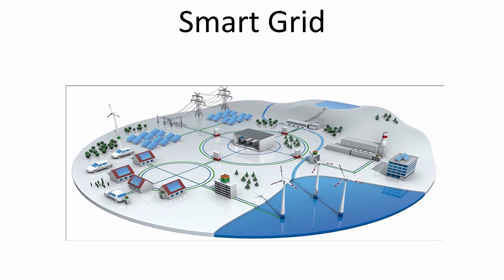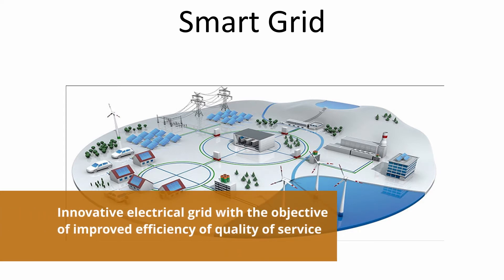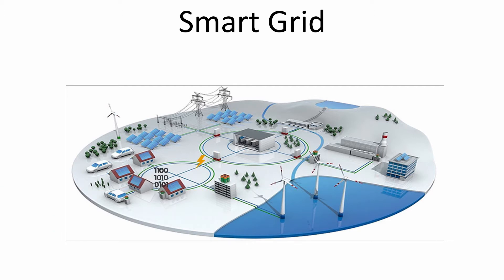Let's start by describing what a smart grid is. Basically it is an innovative electrical grid that relies on multiple devices and energy measures with the objective of improved efficiency and quality of service. It is basically a two-way dialogue where information and electricity are transmitted to and from users.